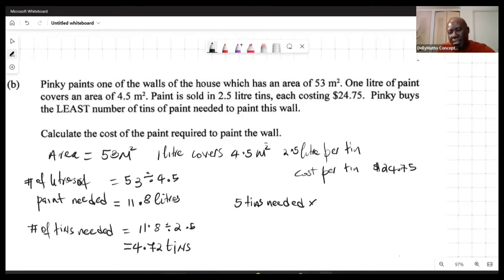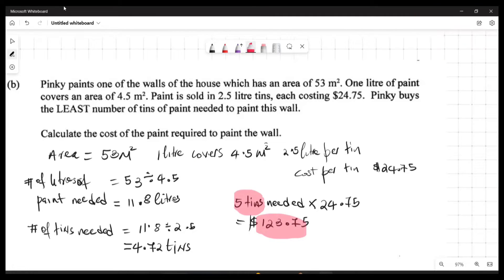And 5 tins at $24.75 for one. So 5 times 24.75, and that is going to cost us $123.75 to buy all 5 tins. Mark you, we will use a little less than 5, but you'd have to buy the tins anyway, and you would have some leftover.